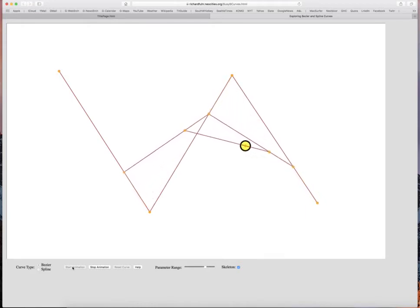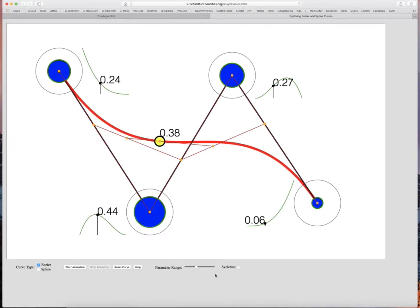And I explain a little bit more about what these are if you click the Help button. So now let's stop the animation, and let's uncheck Skeleton, and we get back to the Bezier curve.